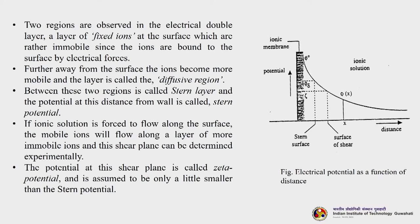This distribution continues until Donnan equilibrium is reached. If the membrane has a negative fixed charge, then ions of opposite charge — positively charged counter-ions — will be attracted to the membrane surface, while ions of the same charge are repelled. In this way, an electric double layer is formed. Looking at the figure showing electrical potential as a function of distance, two regions can be observed: a layer of fixed ions at the surface which are rather immobile since they are bound to the surface by electrical forces.